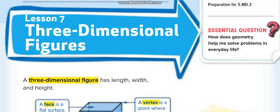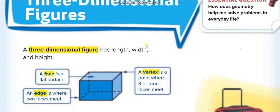Until now, you guys took two-dimensional figures in which you were having just length and the width. You were adding the length and the width to find the perimeter and multiplying the length and the width to find the area. But here, in three-dimensional figures, you will have the length, you will have the width, and you will also have another thing, which is height. So you have three things here: length, width, and height.